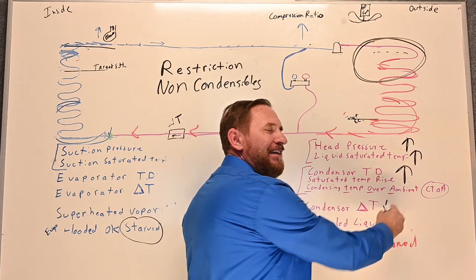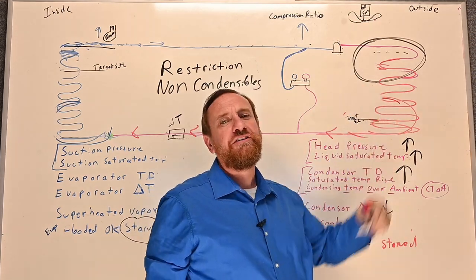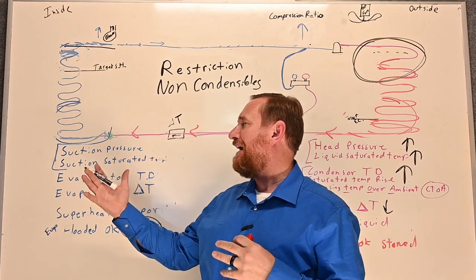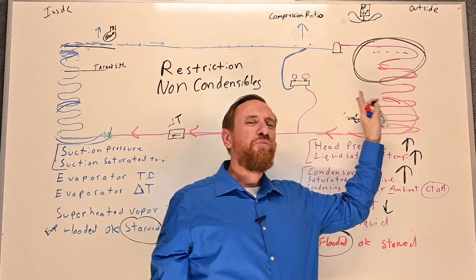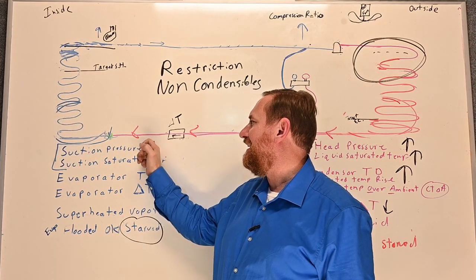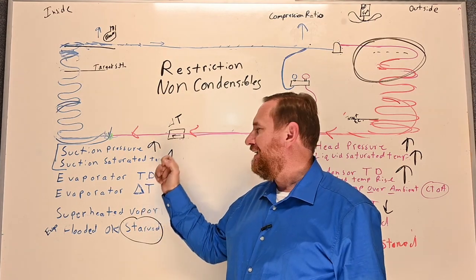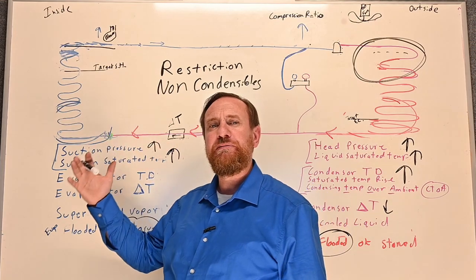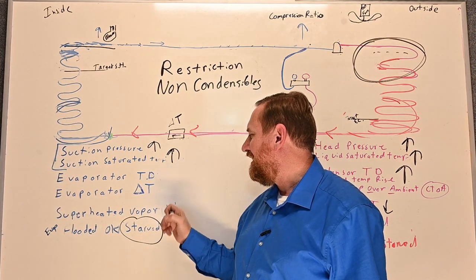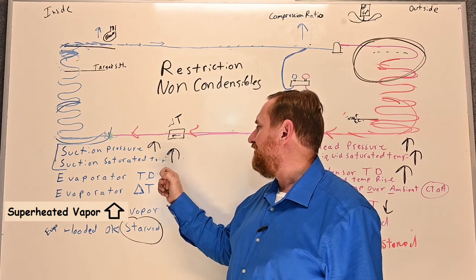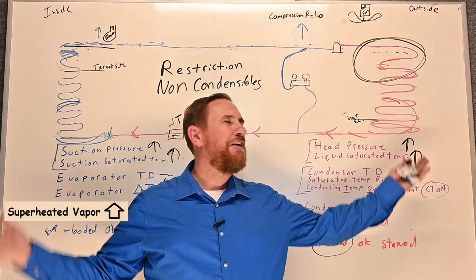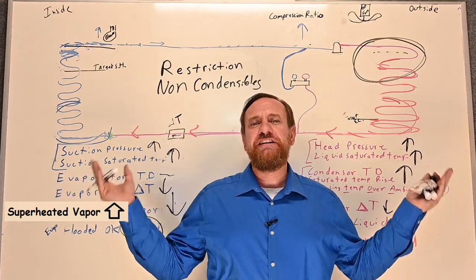With non-condensibles you also end up with less delta T overall because you're moving less heat across the condensing coil. On the evaporator side, the non-condensibles also throw off the temperature-pressure chart. Because non-condensibles affect how much refrigerant enters the evaporator coil, you typically get a higher suction pressure, which connects to a higher saturated suction temperature. Overall it creates variance in the TD — the whole system is thrown into a mess because you don't truly know where saturation is taking place.